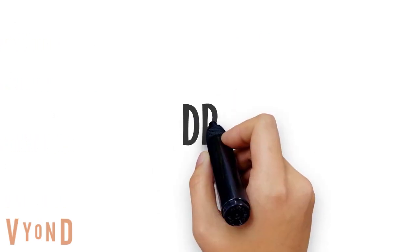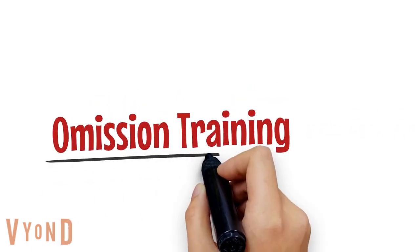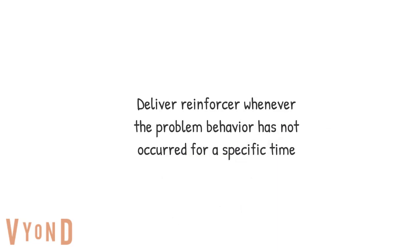The next type of differential reinforcement is DRO — differential reinforcement of other behaviors, also known as omission training. This means you deliver the reinforcer whenever the problem behavior has not occurred for a specific period of time. You are reinforcing the individual for not exhibiting the problem behavior.